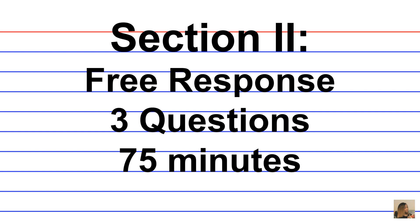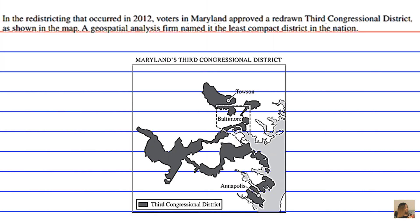You're required to define, explain, and apply geographic concepts and also interpret geographic data. In the redistricting that occurred in 2012, voters in Maryland approved a redrawn third congressional district. As shown in the map, a geospatial analysis firm named it the least compact district in the nation.